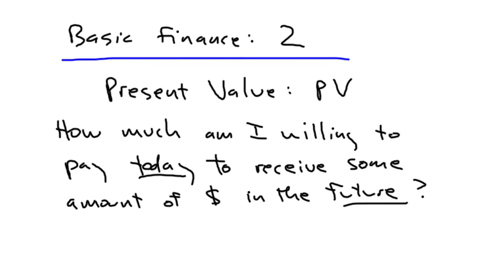PV, which answers the question, how much am I willing to pay today to receive some amount of money in the future? If you promise to give me $1,000 ten years from now, I'm not going to pay you $1,000 today for that, because I'd rather have the money now than the money in ten years, and because if I had the money now, I could stick it in the bank and have more than $1,000 ten years from now.